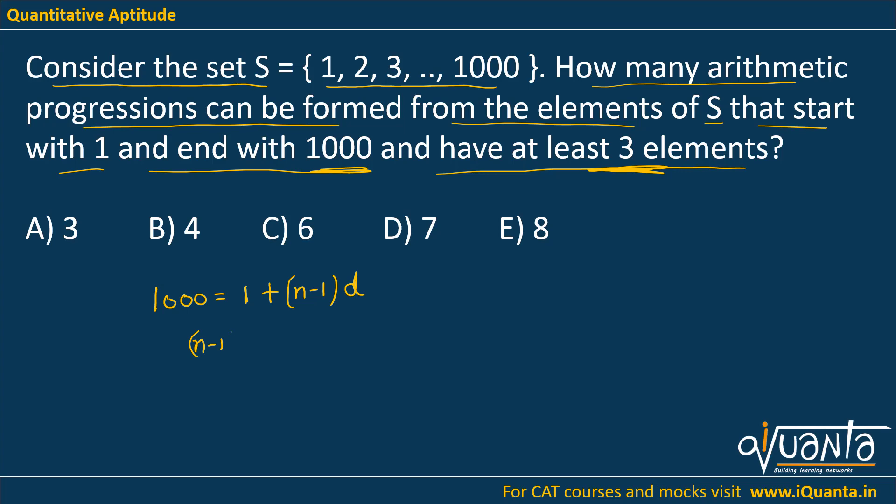So when you solve this you get (N minus 1) times D equals 999. We have been told that the AP should have at least three elements, that means N should be greater than or equal to 3.